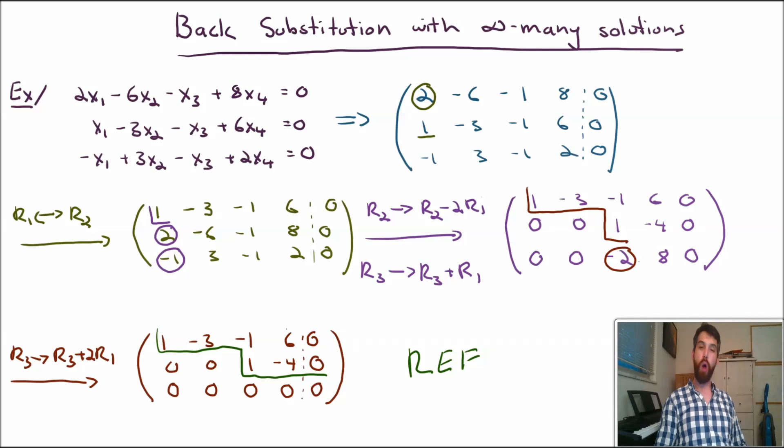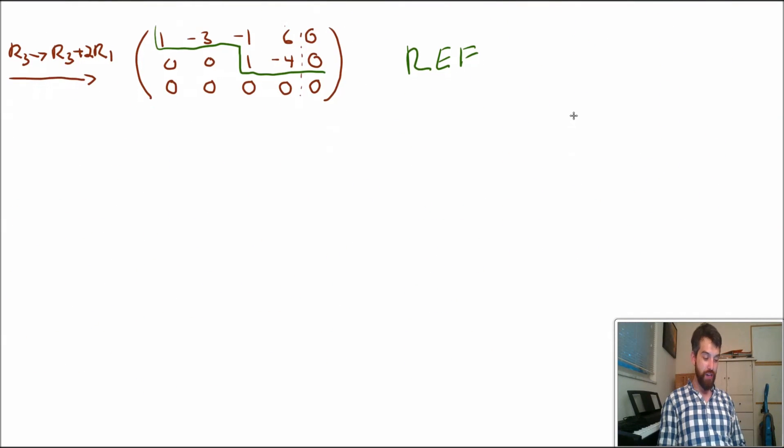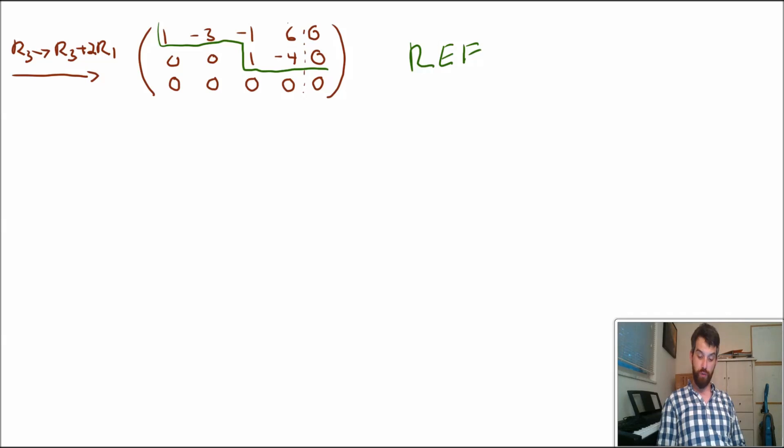Now, that was the routine part. We have successfully put it into an REF form. If we wanted to, we could go along, we could put zeros above those leading ones as well, if we wanted to go to the reduced row echelon form. But as we'll see, this is going to be sufficient. Now, how do I actually solve this? How do I go and figure out what are the solutions? I think there's probably going to be infinitely many because I have this row of zeros here, but how do I do it?